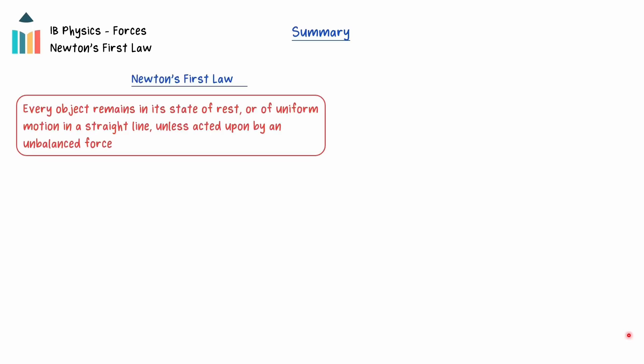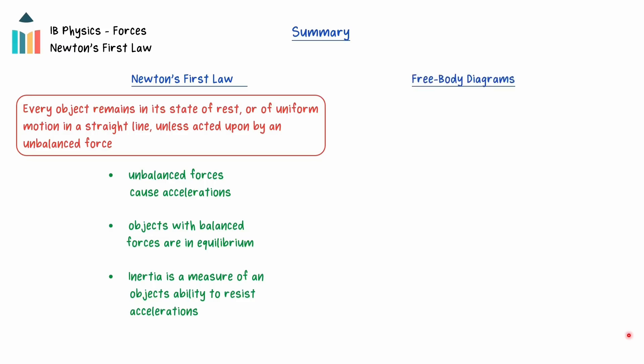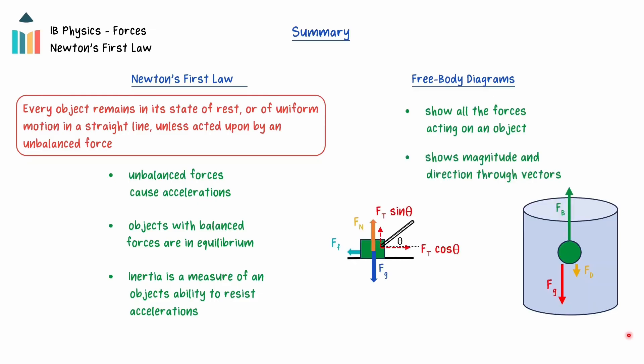In summary, Newton's first law states that an object remains in its state of rest or of uniform motion in a straight line unless acted upon by an unbalanced force. This means that unbalanced forces will cause accelerations, but objects with balanced forces are said to be at equilibrium — they are moving at a constant velocity or at rest. Inertia is a measurement of an object's ability to resist accelerations and is related to its mass. A free-body diagram is an important tool for analyzing motion and forces. In a free-body diagram, all the forces are shown that are acting on an object, and the magnitude and the direction are demonstrated through vectors. Thanks for watching!